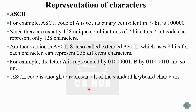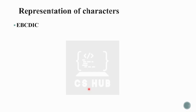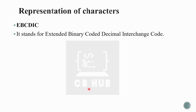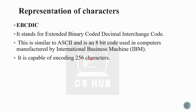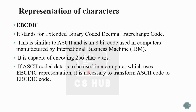Next is EBCDIC. EBCDIC stands for Extended Binary Coded Decimal Interchange Code. This is similar to ASCII and is an 8-bit code used in computers manufactured by IBM. It is specific to IBM machines and is capable of encoding 256 characters.